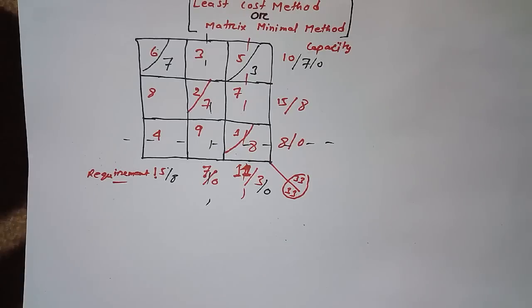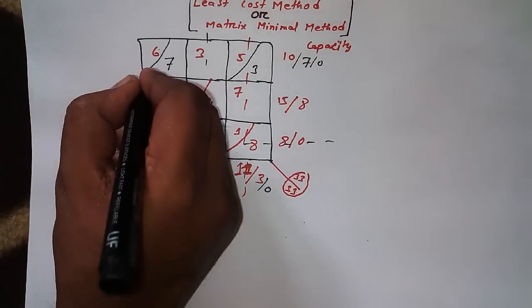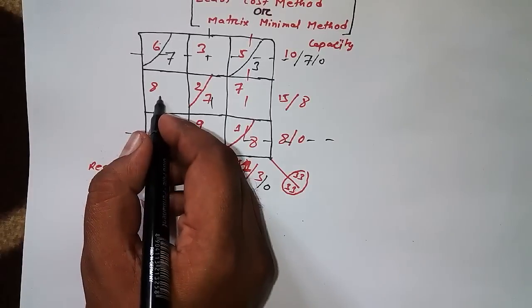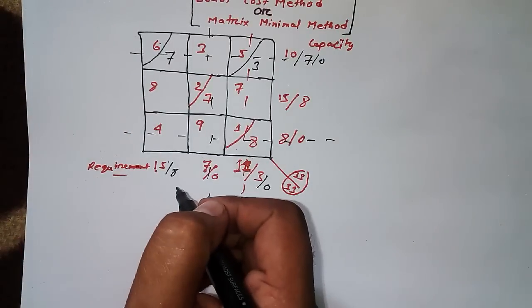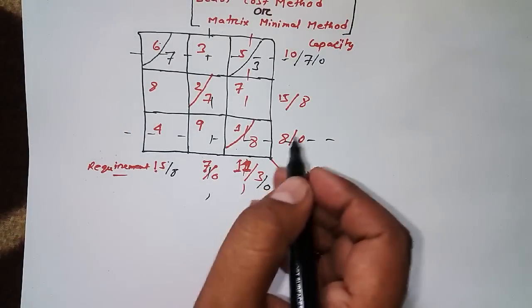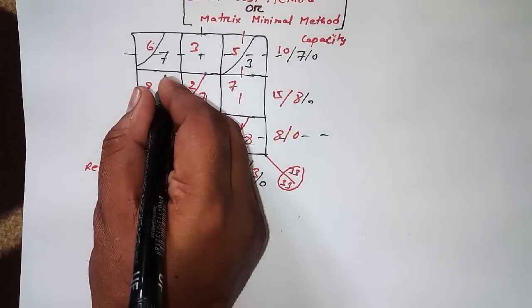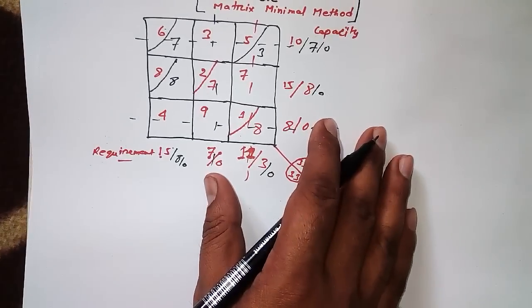I'm done with this row. Now 8 is remaining. This is the requirement and this is the capacity, so I can fulfill the requirement. It's done.